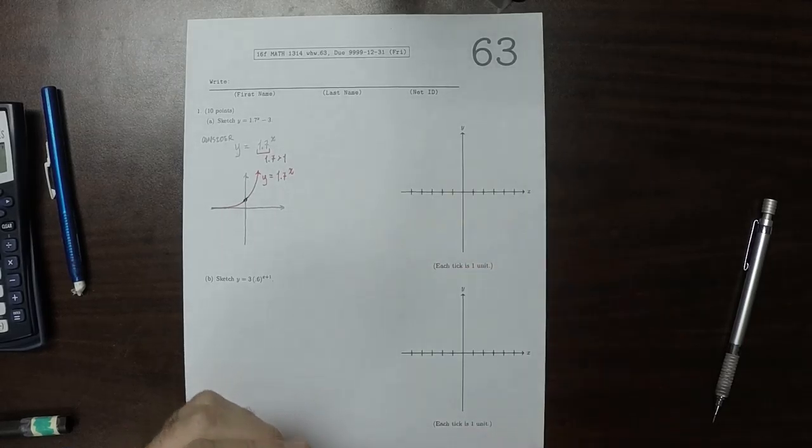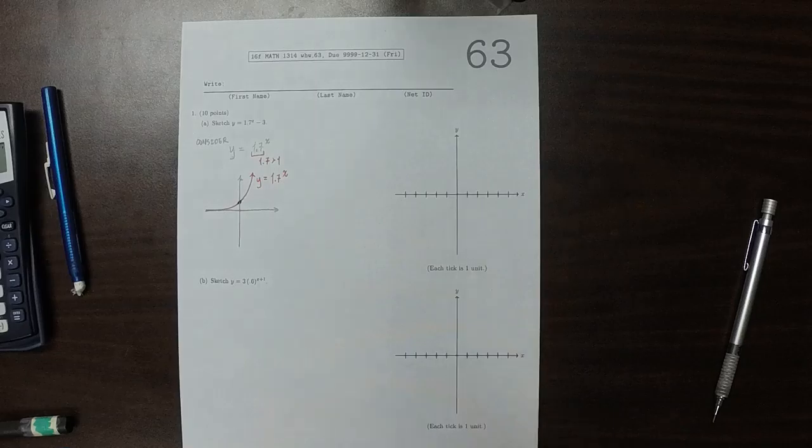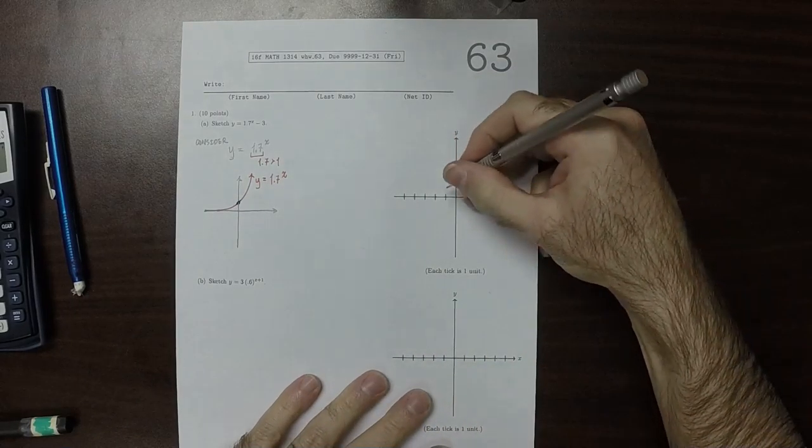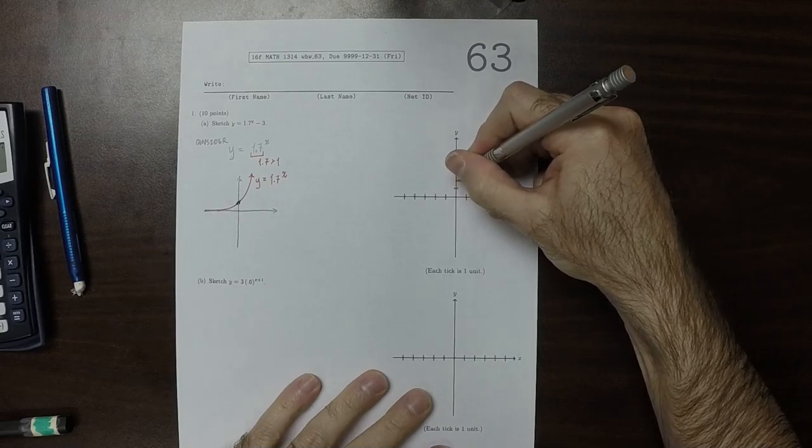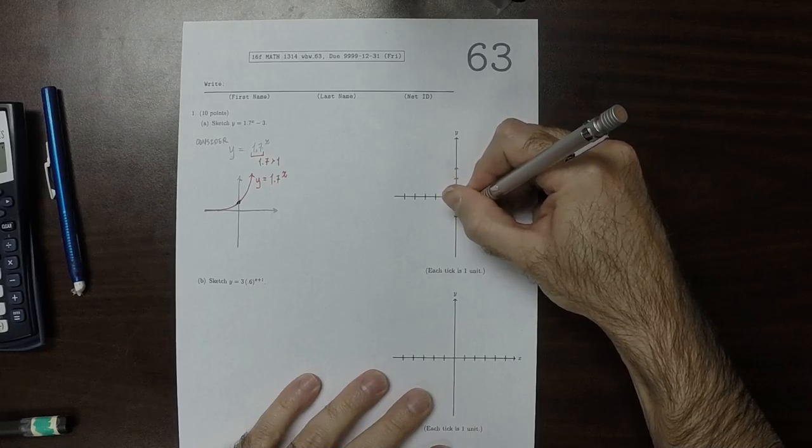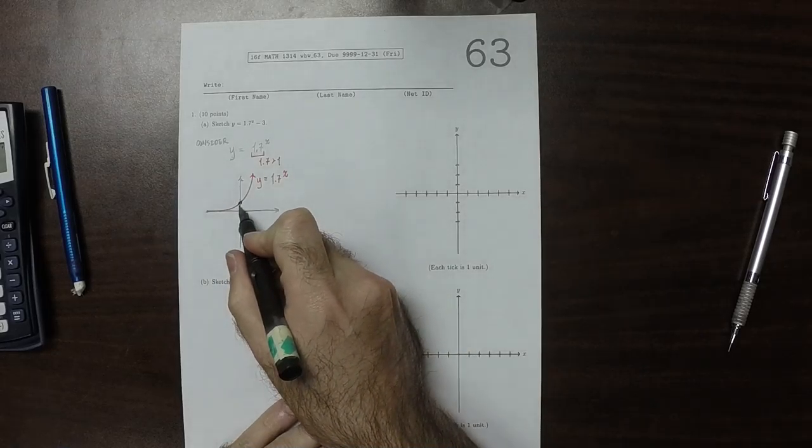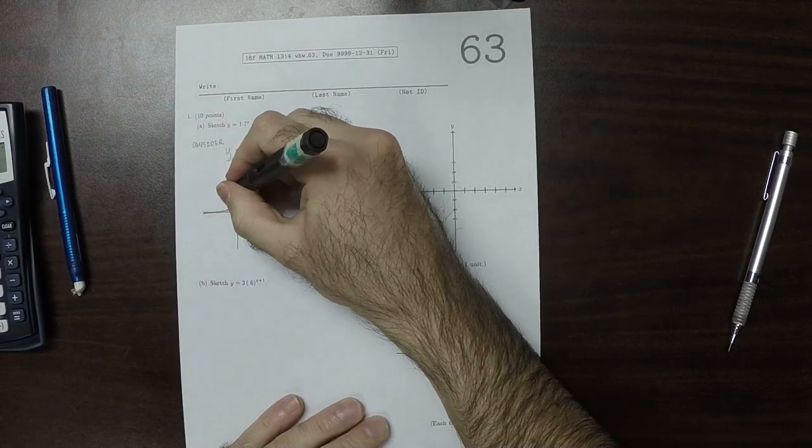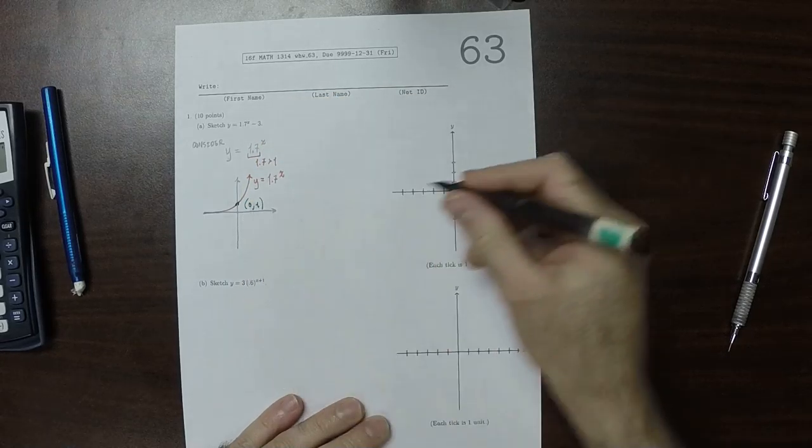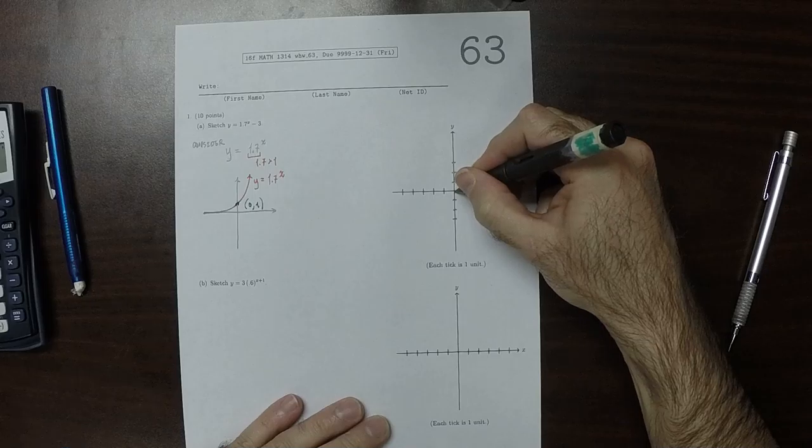So then the action of subtracting 3 means that the whole graph is going to be shifted down. So if this is 1, 2, 3, and this is 1, 2, 3, then this point right here, that's at 0, 1. So if y is 1, it will be at 0, negative 2. So 1, 2.